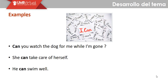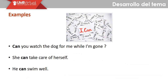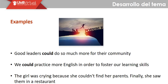Let's see some examples. 'Can you watch the dog for me while I'm gone?' 'She can take care of herself.' 'He can swim well.' So we have a question, a positive statement, and another positive statement. More examples: 'Good leaders could do so much for their community.' 'We could practice more English in order to foster our learning skills.' 'The girl was crying because she couldn't find her parents. Finally, she saw them in a restaurant.' Aquí podemos ver oraciones en presente que hablan de posibilidades, o de permisos en el caso de preguntas.